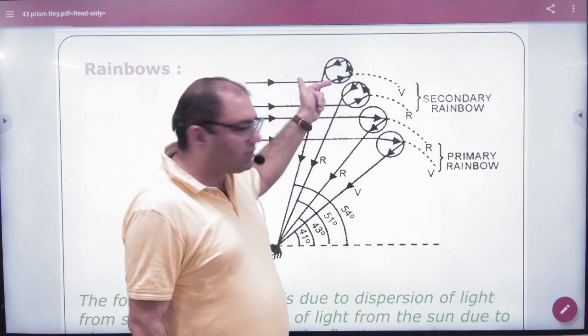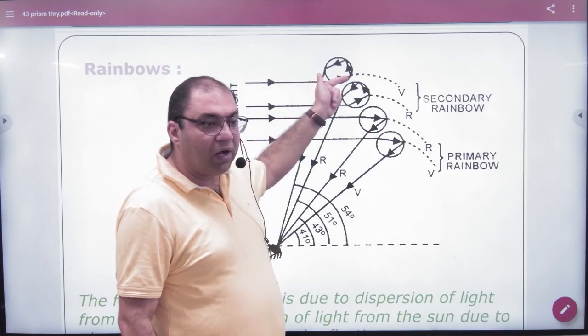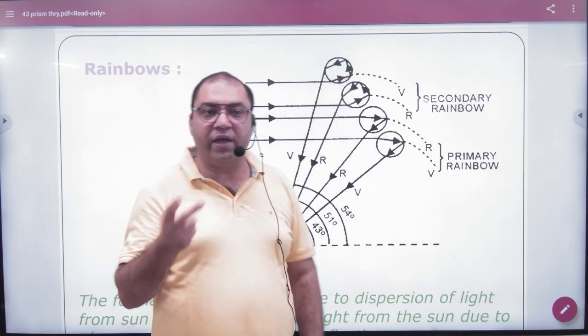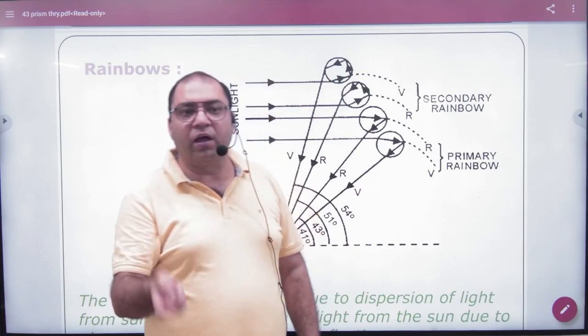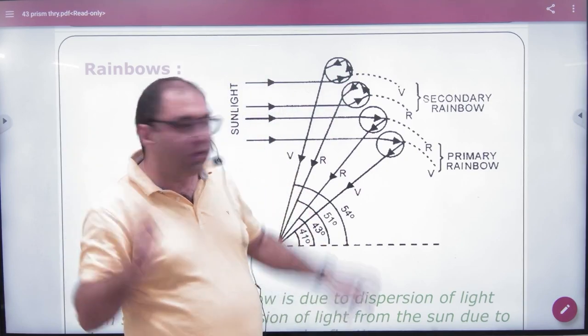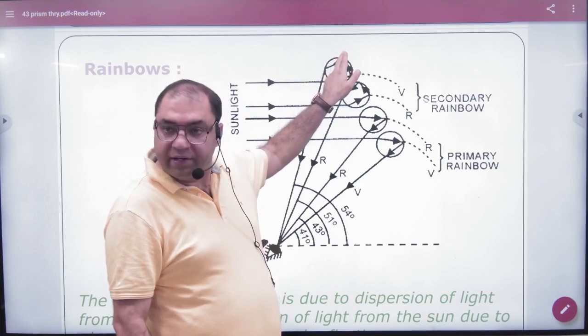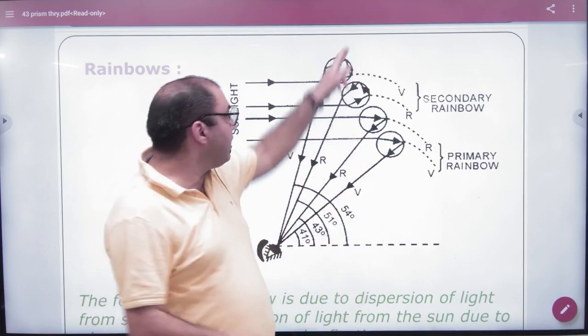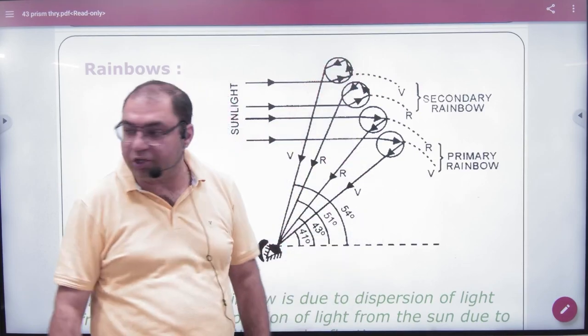When the light goes into the droplet, it's refraction. It undergoes TIR. The angle of incidence is greater than critical. Then it reflects again, greater than critical. Two times TIR, then the light refracts out and comes to the observer.